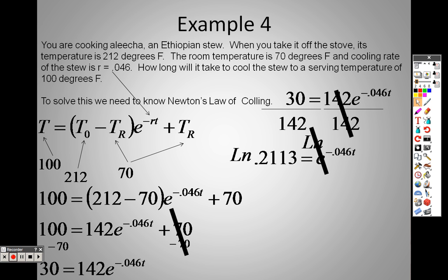So the key here is if they're opposites, that means I multiply both sides by the natural log. Well, natural log and E cancel each other out, so all I have left over on that side is negative 0.046T, and the natural log of 0.2113 on that side.